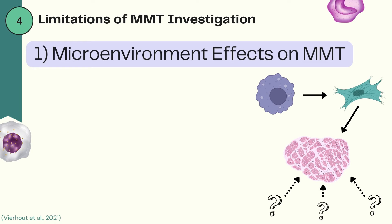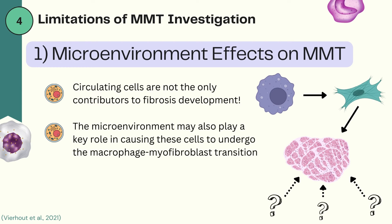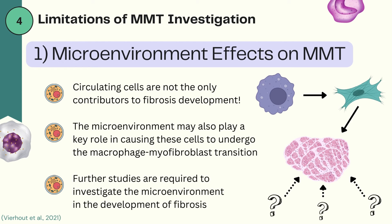Although there is an increasing amount of evidence for MMT across species, the literature supporting this theory still has some limitations. The first limitation is that circulating cells are not the only contributors to the development of fibrosis. The microenvironment may also play a key role in causing those cells to undergo MMT, and there is likely a complex interplay between circulating cells and the microenvironment in the tissue. Further studies are required to investigate the microenvironment in the development of fibrosis.